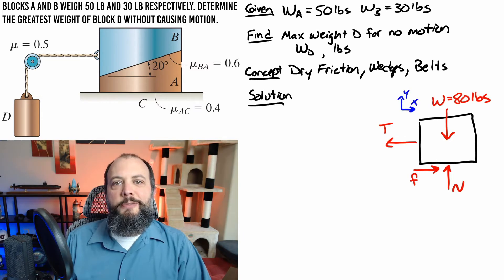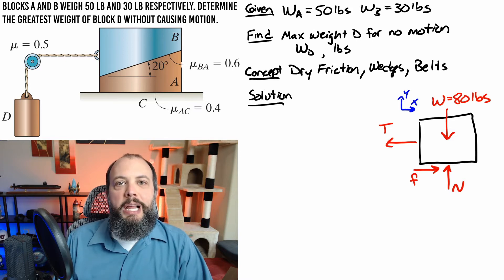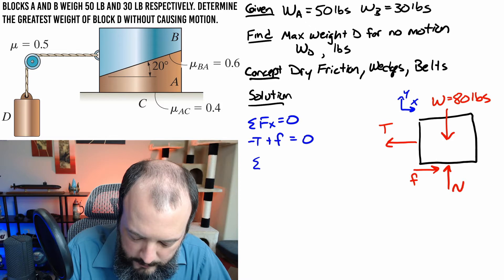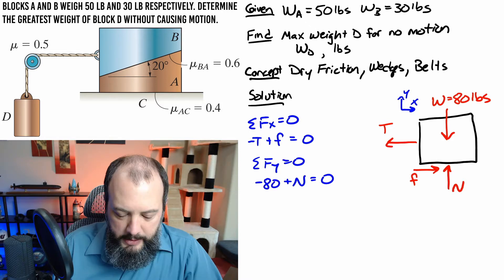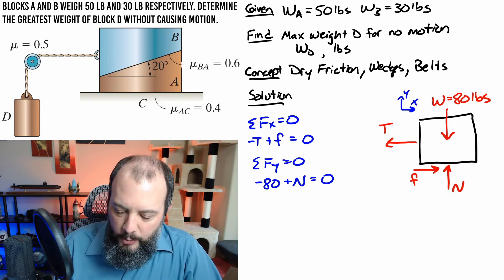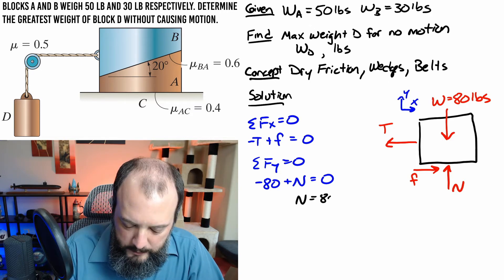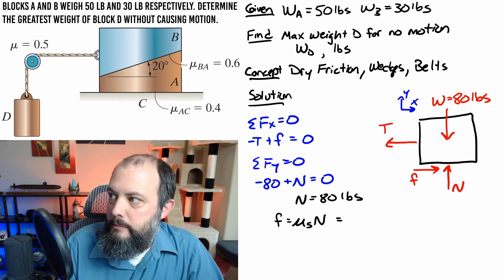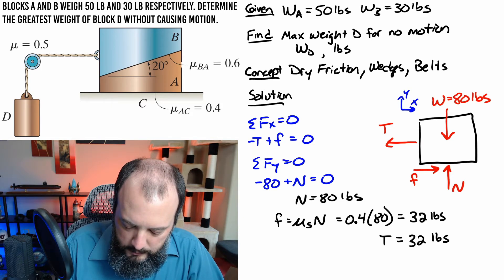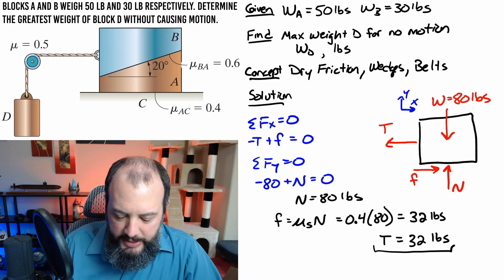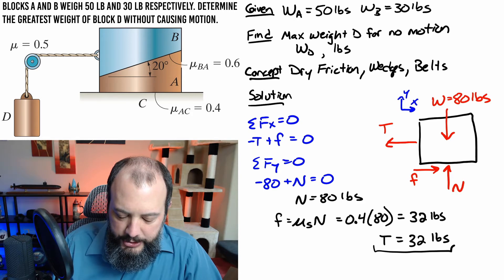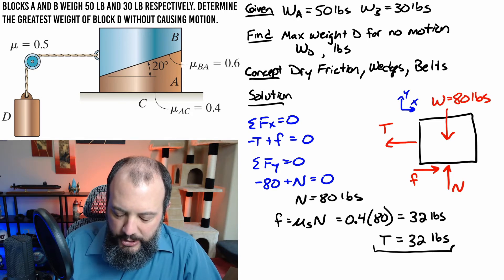My free body diagram for this first case comes out pretty easy. I just ignore the fact that they're wedges and assume they're going to be stuck together and only sliding along the ground so just model it as a single block. The equilibrium equations in the x and y direction are pretty straightforward since each force is either vertical or horizontal none of the angles are relevant. Solving for n equals 80 pounds sets me up to use the dry friction equation that friction at the ground will be the coefficient of static friction times the normal force.